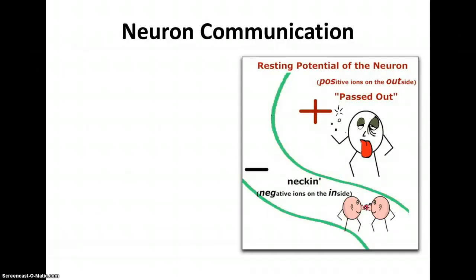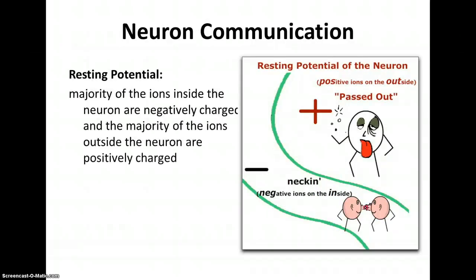So neuron communication. We go from the resting potential where the majority of the ions inside of the neuron are negatively charged and the majority of the ions outside of the neuron are positively charged. So here's inside of the neuron, negative charge, mostly positive charge on the outside. And I have another mnemonic device here for you to remember.